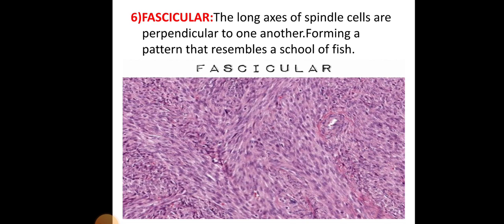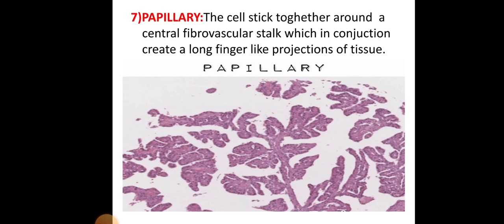The papillary pattern is where cells stick together around a central fibrovascular core, creating long fibre-like papillary projections of tissue. This type of pattern is most commonly seen in papillary carcinoma of the thyroid, though it is present in other tumours as well.